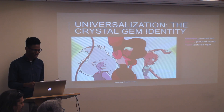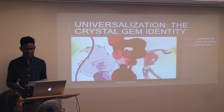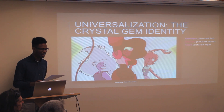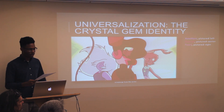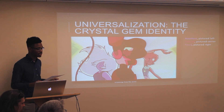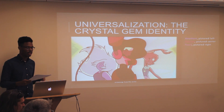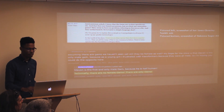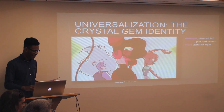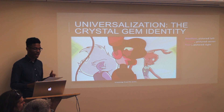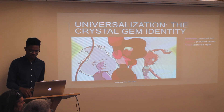Looking at my first argument, the universalization of queerness within the show, we see this evident within the primary cast comprised of the self-proclaimed Crystal Gems. Characters such as Garnet, Amethyst, and Pearl belong to an alien species known as gems. And upon first glance, we notice that the gems appear to be represented as female characters. However, gender identity and consequently sexual identity becomes a complicated aspect of the gem existence when we take a closer look at how the concept of gender — or lack thereof — operates within the alien race.